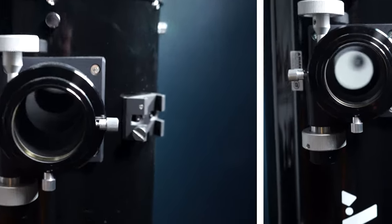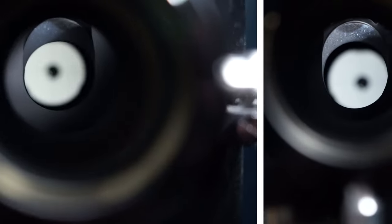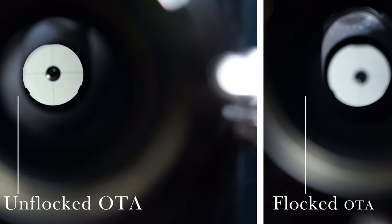First, let's talk about the flocking paper. And what this is going to do is just enhance the contrast of your views. It's going to do this by preventing any stray light coming into your optical tube and then bouncing back into your eyepiece.